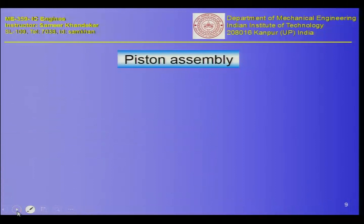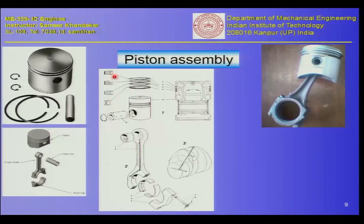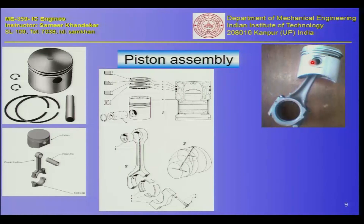Let us move on to the piston assembly. You can see the complete assembly here — the piston, and piston rings of different shapes and types. There are four piston rings on this piston. The connecting rod fits inside the piston and is secured with a gudgeon pin assembly, which is clearly visible here. Two circlips are used to lock the gudgeon pin inside the piston, connecting the rod to the piston.